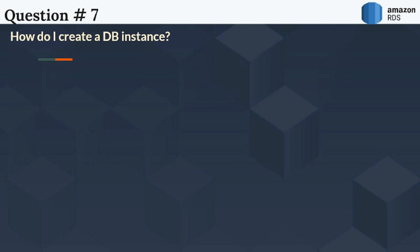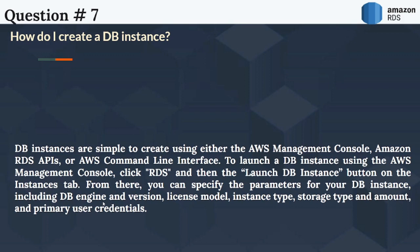The next question is: How do I create a DB instance? DB instances are simple to create using either the AWS management console, Amazon RDS APIs, or AWS command line interface. To launch a DB instance using the AWS management console, click RDS and then the Launch DB instance button on the instances tab. From there, you can specify parameters including DB engine and version, license model, instance type, storage type and amount, and primary user credentials.